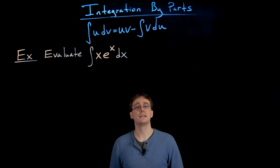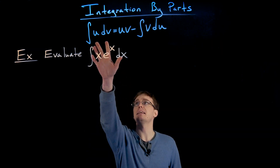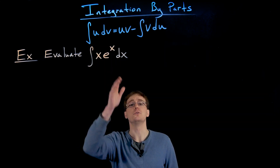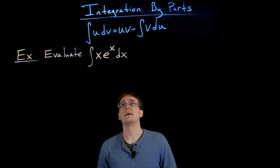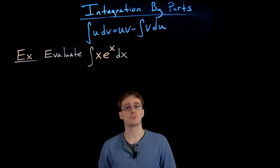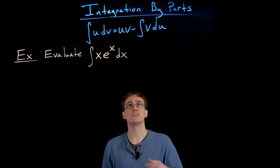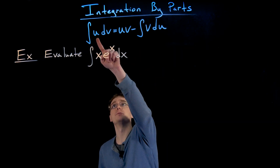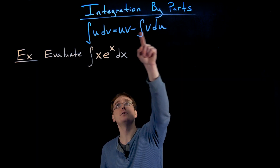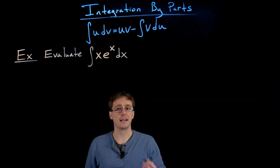If we do want to use our integration by parts formula, we start by thinking of our integral as already being in the form u times the differential of v. We then identify those two pieces, u and dv. Once we have u and dv, we can use those to find the remaining pieces: from u we differentiate to find du, and from dv we anti-differentiate to find v.